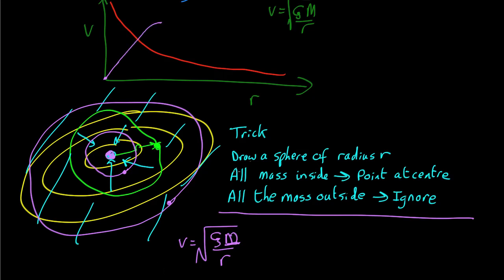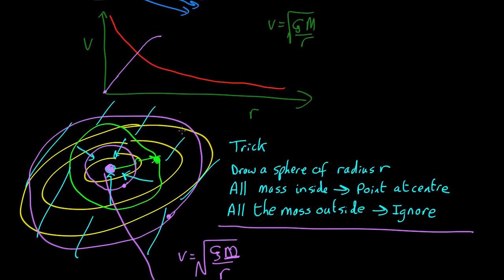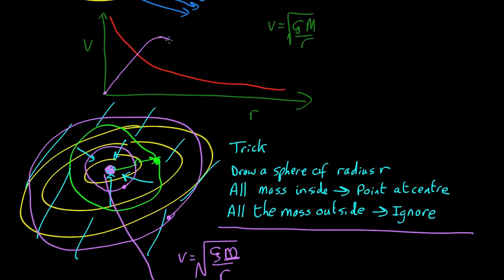And then when you go further out still, say over here, r has got larger. M can't get any larger because you've already got all the stars inside. So now it starts behaving like 1 over root r, as you expect. So this is called a galaxy rotation curve.